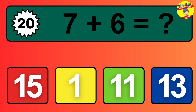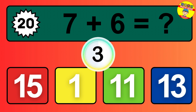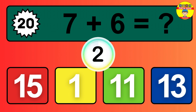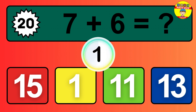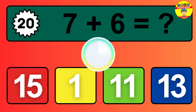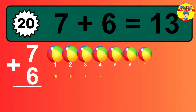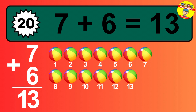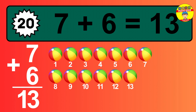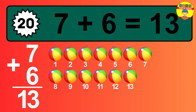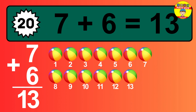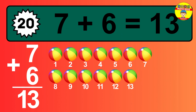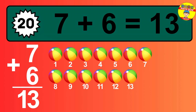Question 20. 7 plus 6 equals what? Let's count it. 1, 2, 3, 4, 5, 6, 7, 8, 9, 10, 11, 12, 13. The answer is 7 plus 6 is 13.